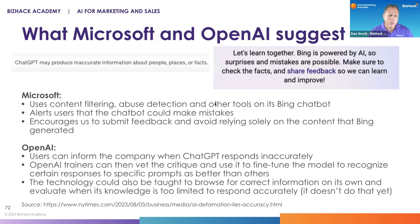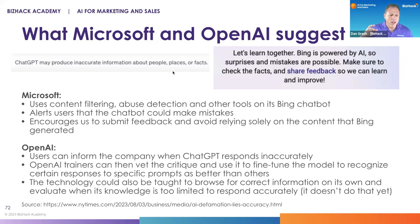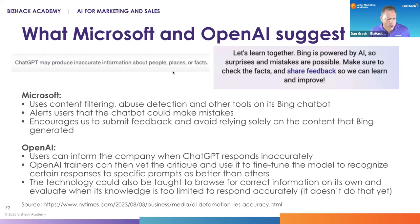With Microsoft, the corporate response to what to do about hallucination is: we're building tools like content filtering and abuse detection into Bing to make it safer and more accurate. Users like us should alert the chatbot when it makes mistakes and submit feedback. Also, please don't rely on the information.